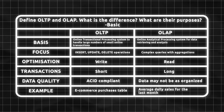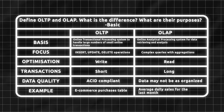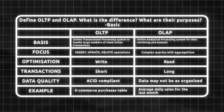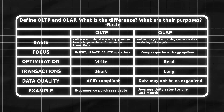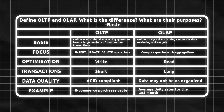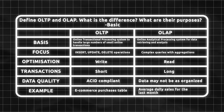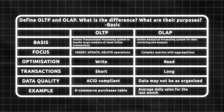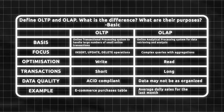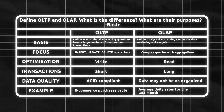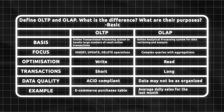Define OLTP and OLAP - what are the differences and their main purposes? OLTP, online transactional processing system, handles a large number of small online transactions. It focuses on insert, update, delete operations. It is write-optimized and transactions are short and ACID compliant. OLAP, online analytical processing system, is meant for data analysis, focuses on complex queries with aggregations, and is read-optimized.